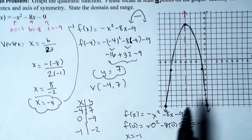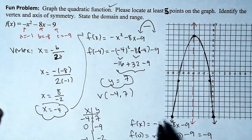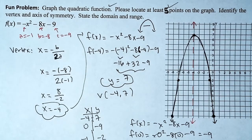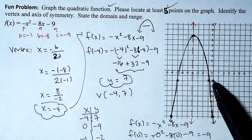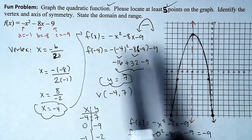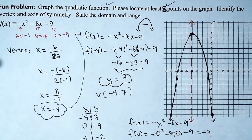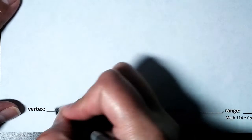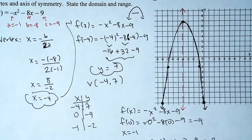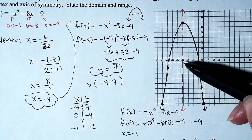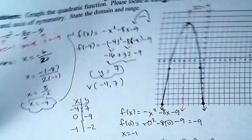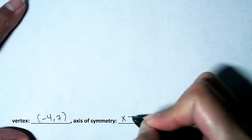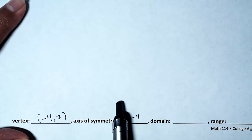Let's check we nailed everything. We graphed it. Five points: the first from the vertex, the second from evaluating, the third from reflection, the fourth from more math, and the fifth from reflection. The vertex is negative 4, 7. For the axis of symmetry — a common mistake is writing just negative 4, but that's not an equation. The axis of symmetry is the vertical line x equals negative 4.